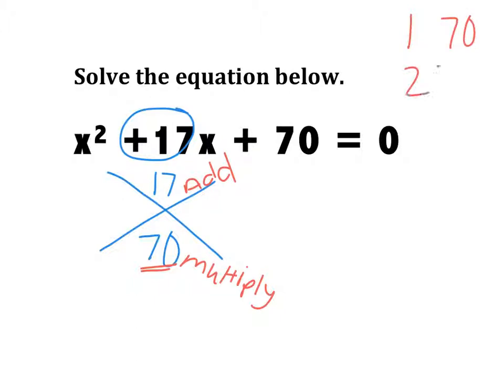We got 1 and 70, 2 and 35, 7 and 10. As soon as I write 7 and 10, you can obviously see 7 plus 10. Oh, that works. So, I'm going to slide those two numbers in there, 7 and 10.